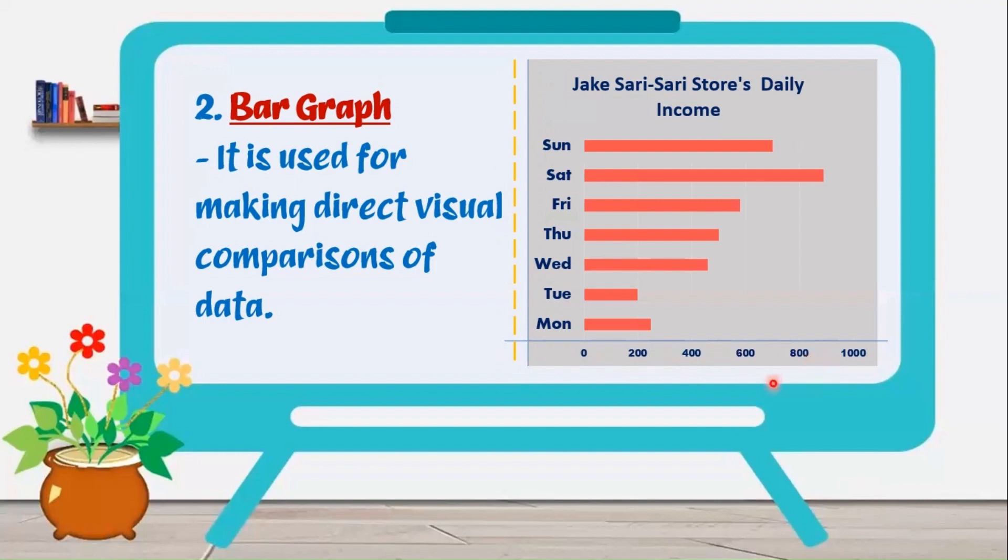In the x-axis reflects the income. This bar graph is formatted horizontally. We can opt to make it vertical, so in that case the days of the week reflects in the x-axis and the income reflects in the y-axis.